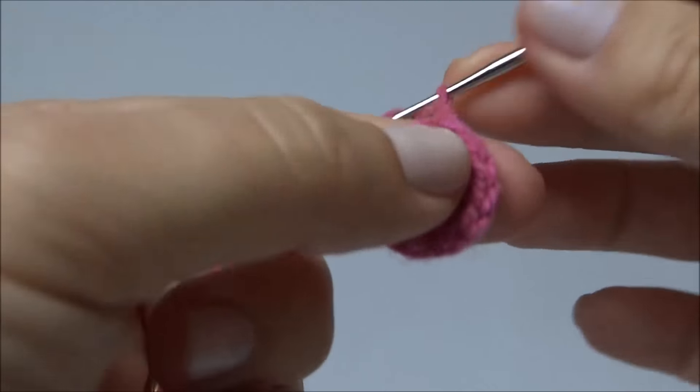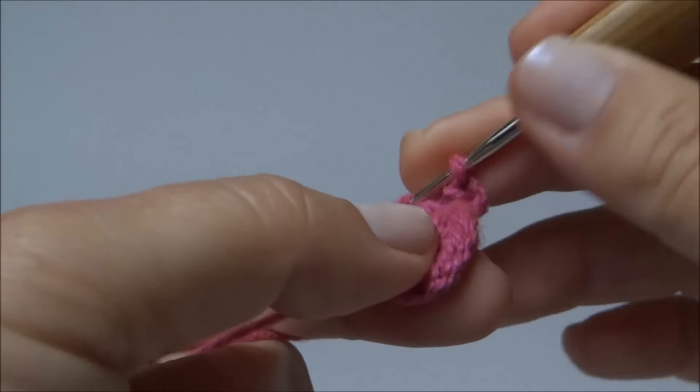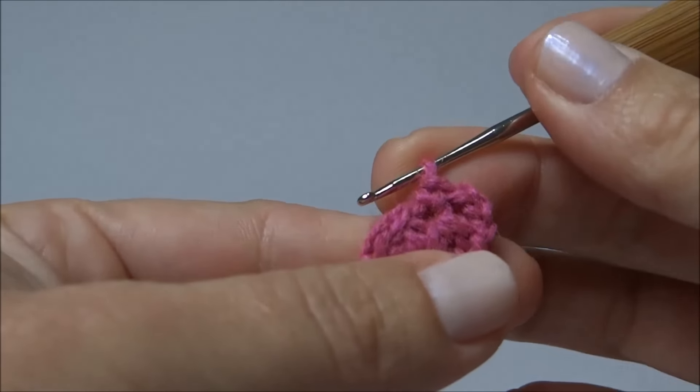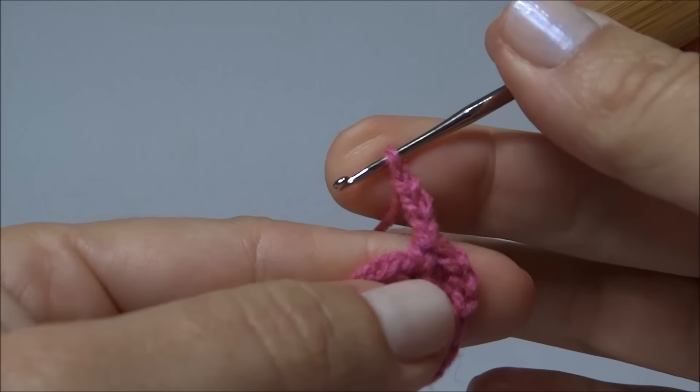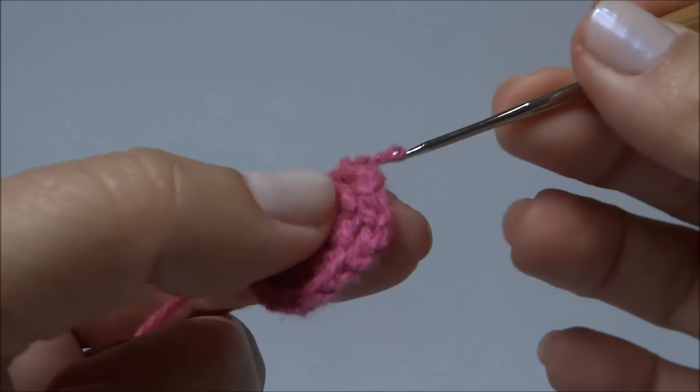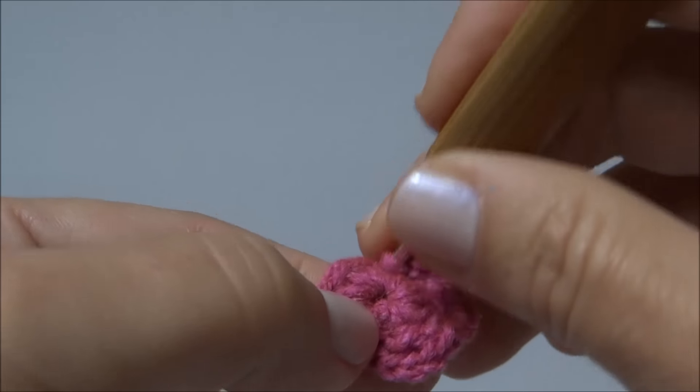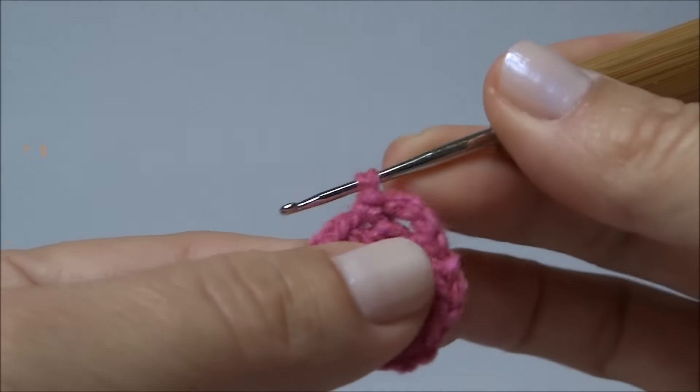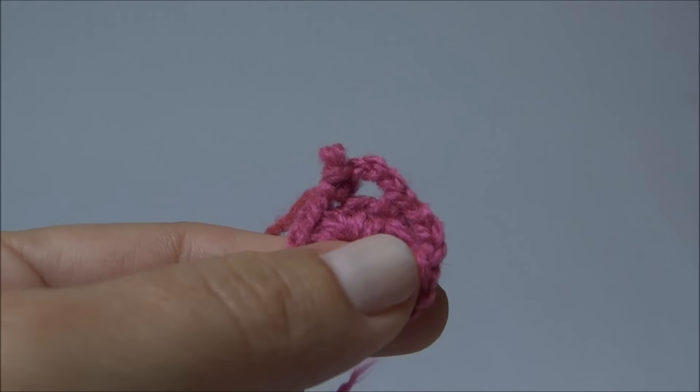Agora faço três correntes, pulo um ponto da carreira de base e no próximo prendo um ponto baixo. Três correntes, pulo um ponto da carreira de base e no próximo prendo um ponto baixo. Dessa forma em volta de toda a carreira até completar seis argolas com três correntinhas cada.